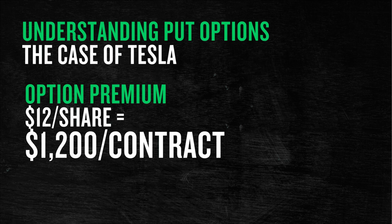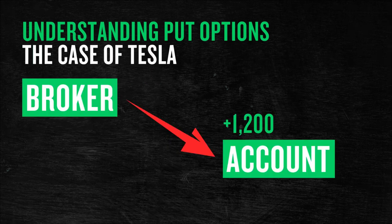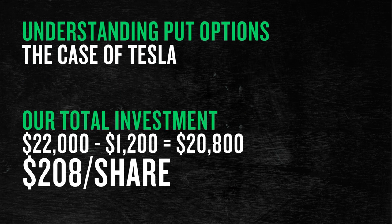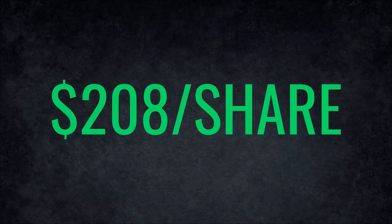If we sell one contract of put options, we will receive a premium of $1,200 — that comes directly to our account. That means our total investment will not be $22,000; it will be $20,800, because we will have already received $1,200 in premiums. That also means we will not buy Tesla at $220 per share — we will actually buy it at $208 per share.